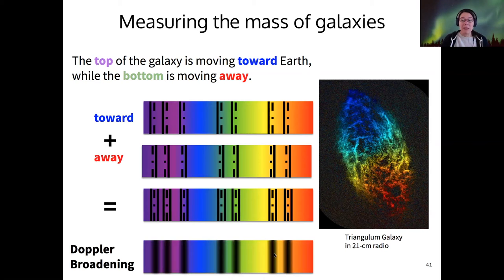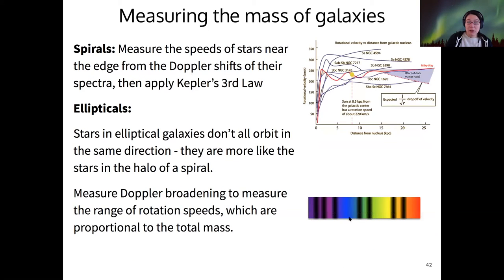And those will result in this broadened Doppler line. So this is an effect we call Doppler broadening. We're just looking at lots of little Doppler shifts added together. And by figuring out the range of speeds from this Doppler broadened line, then we can calculate the mass of an elliptical galaxy. So this is the essential technique for measuring elliptical galaxies is measuring their Doppler broadening, taking their range of rotation speeds. And then again, based on the size of the galaxy and the rotation speeds of the fastest stars, we can find the total mass of the elliptical.